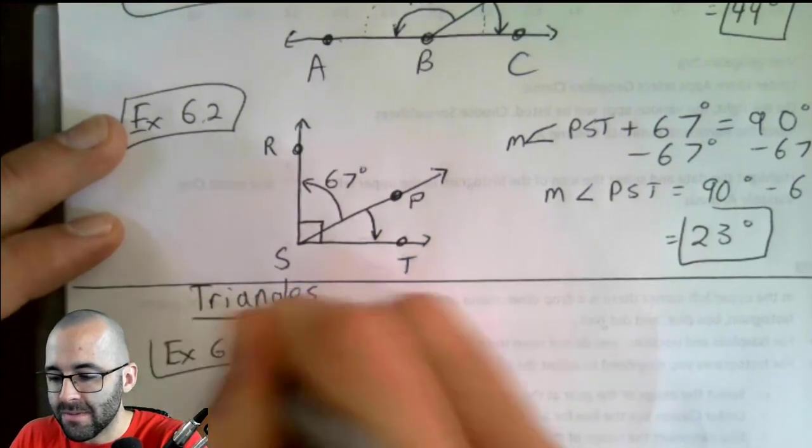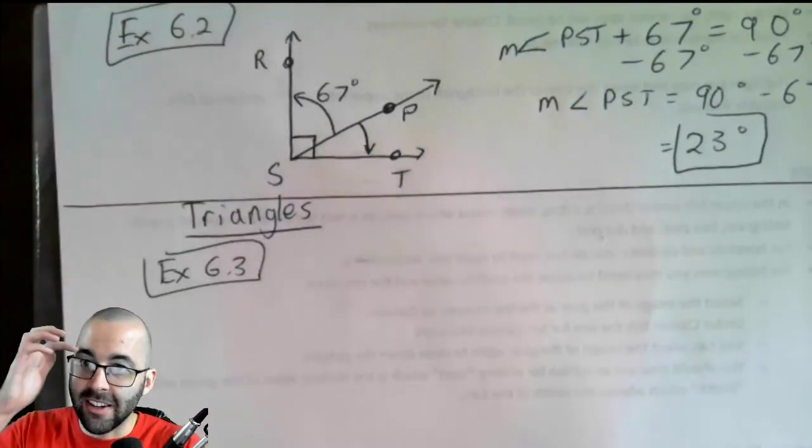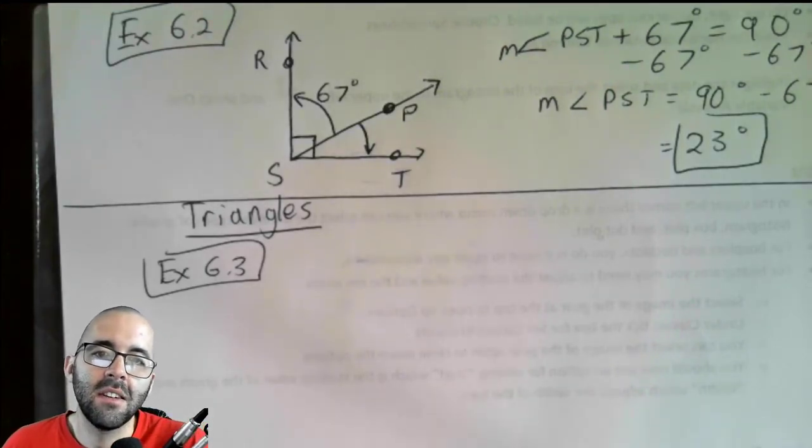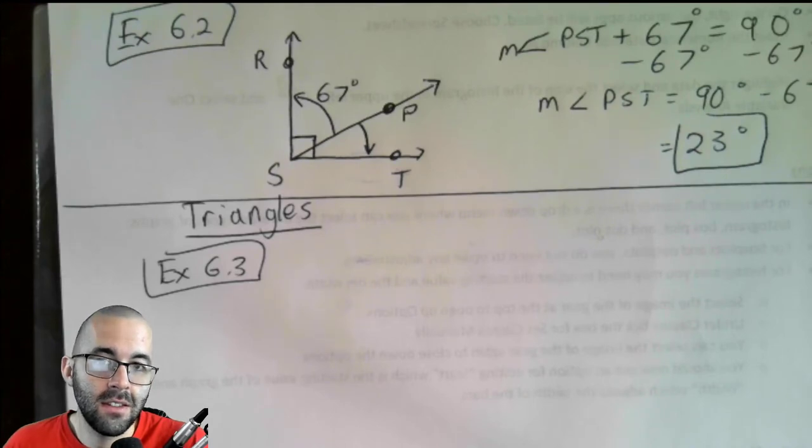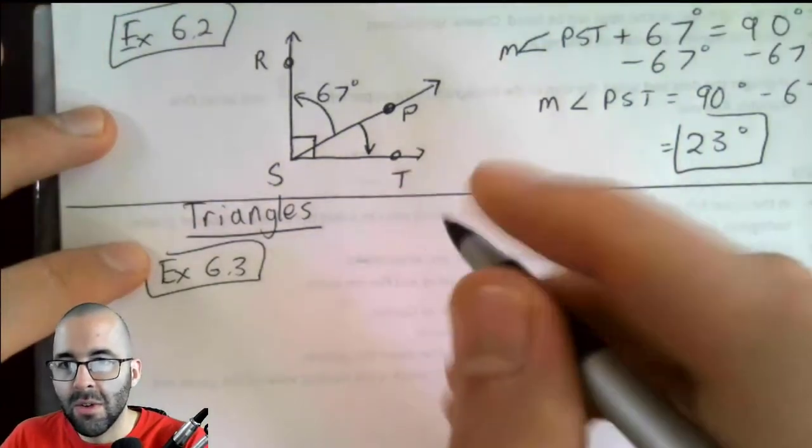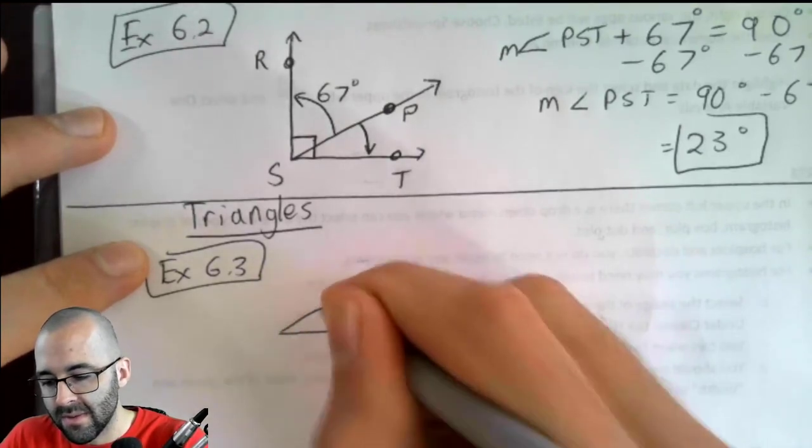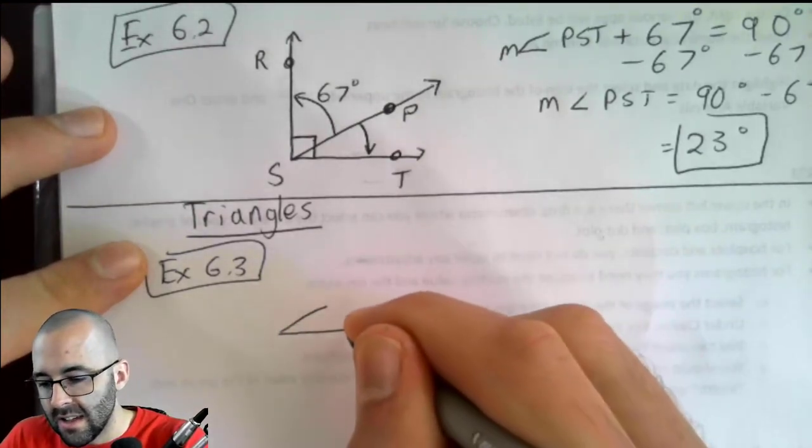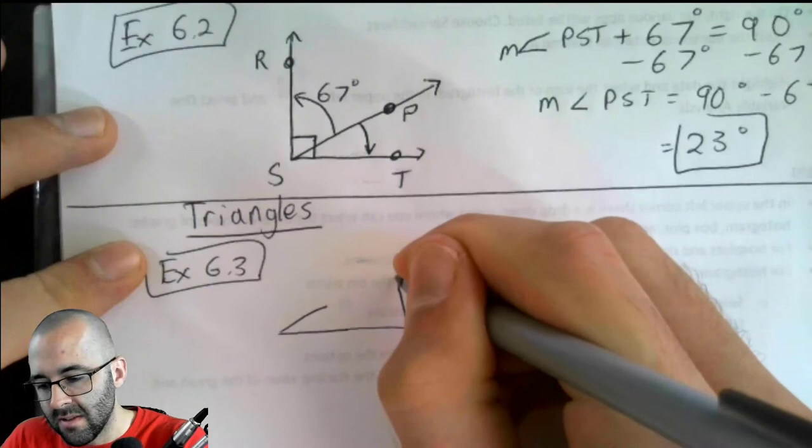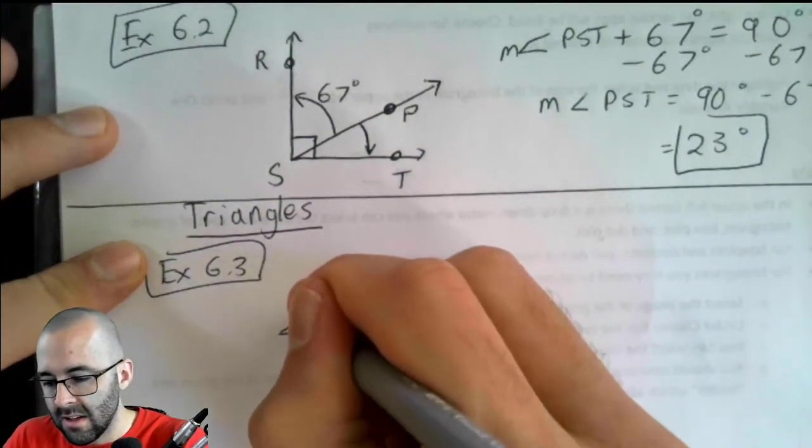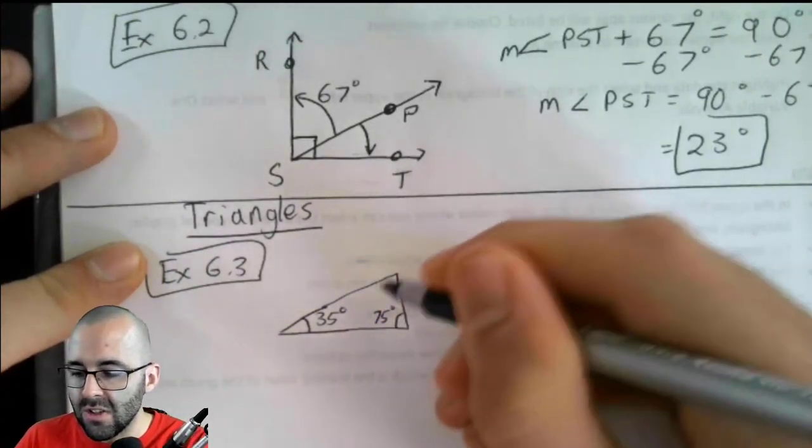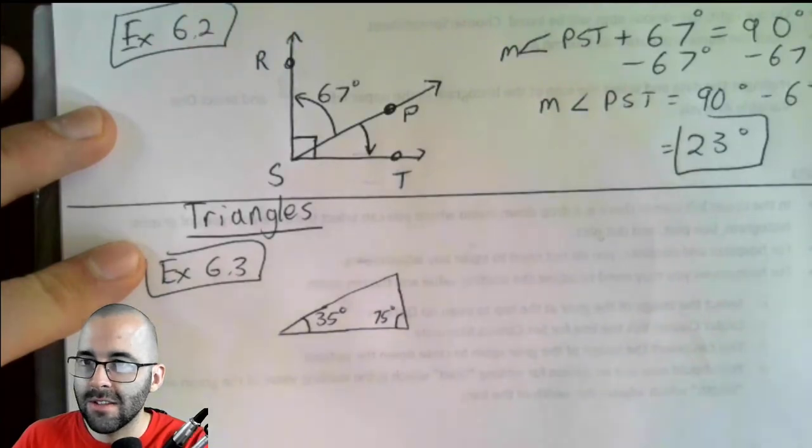Let's do example 6.3. We have a triangle here that has two angles that measure 35 degrees and 75 degrees. Find the measure of the third angle. So if you want, you can draw a picture. You don't have to draw a picture, but sometimes pictures can be helpful. So, 35 degrees is maybe kind of small, maybe something like this. 75 degrees is kind of bigger. And so, the last one has to be something like that. So, this angle right here is 35 degrees. This angle right here is 75 degrees. And the question is, what's this other angle?